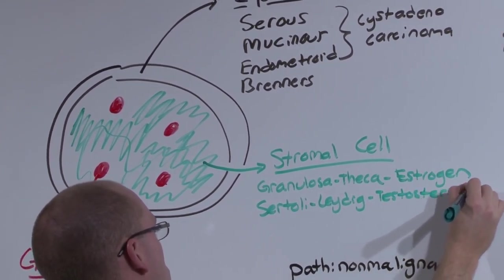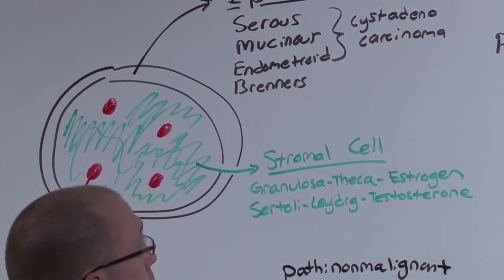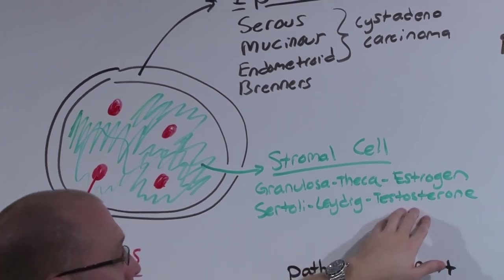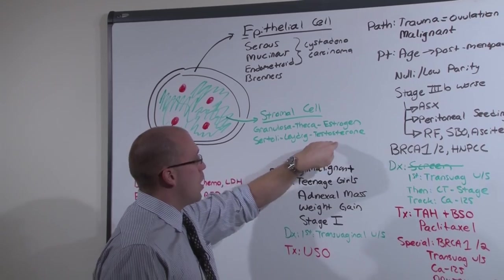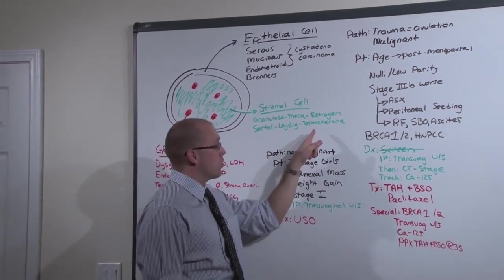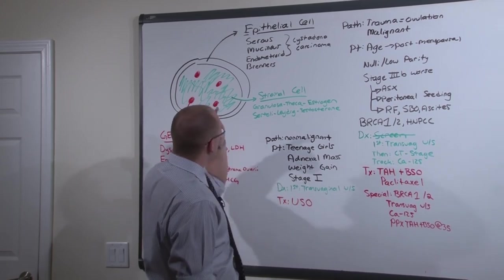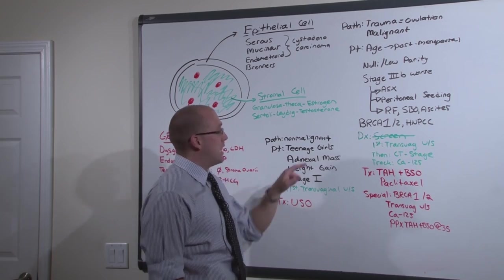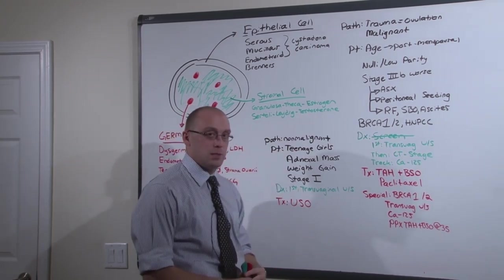So there's really two ways an ovarian cancer can present. Either as a big mass from the epithelial cell cancers or the germ cell cancers, or by endocrine abnormalities. You should suspect an ovarian cancer whenever you have endocrine abnormalities of estrogen and testosterone or an adnexal mass.